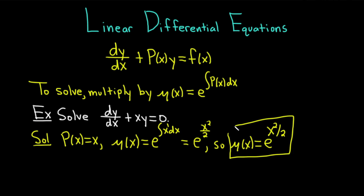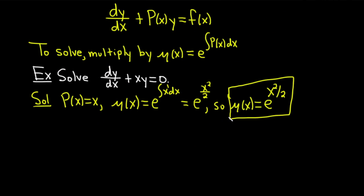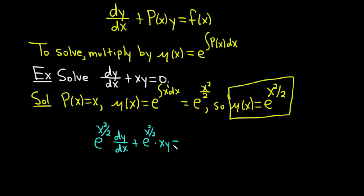I'm going to put this in a box because it's important. The next step is you're going to take μ(x) and multiply your differential equation by μ(x) — basically multiply both sides by the integrating factor. So we have e to the x squared over two times dy/dx plus e to the x squared over two times xy equals zero, since the right hand side is just zero.